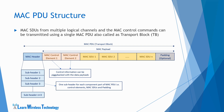The control elements enable control information such as buffer status or power headroom reports to be piggybacked with the data payloads transmitted on DLSCH and ULSCH transport channels. For the control elements, the subheader identifies the specific control element being sent. The MAC SDUs are the logical channel SDUs which correspond to RLC PDUs. For the MAC SDUs, the subheader specifies the logical channel number and the size of the SDU being sent.